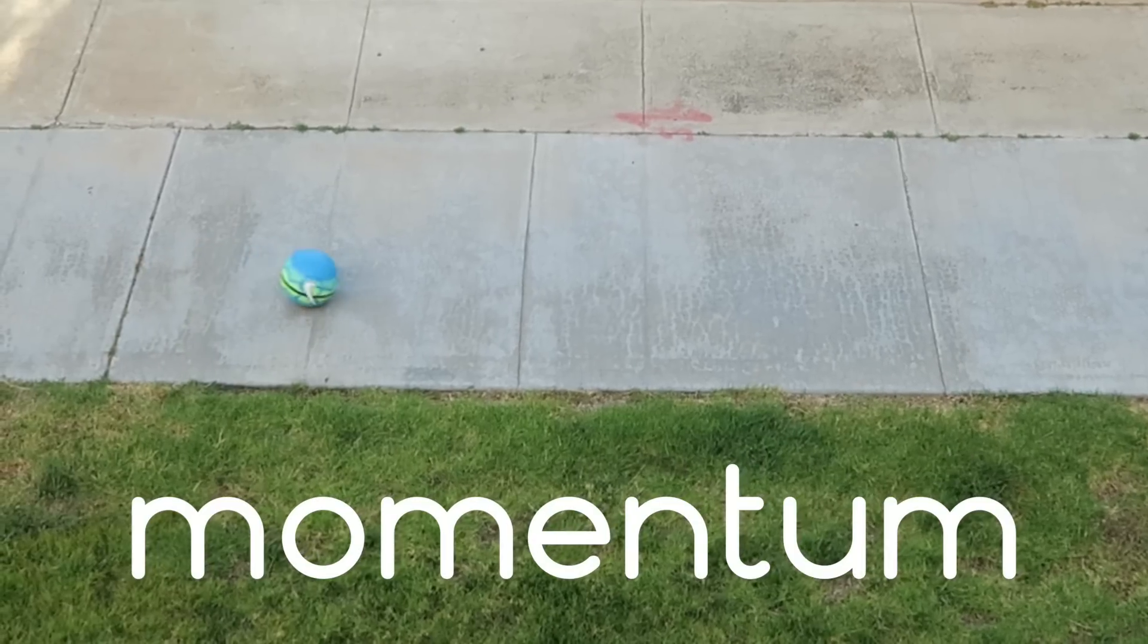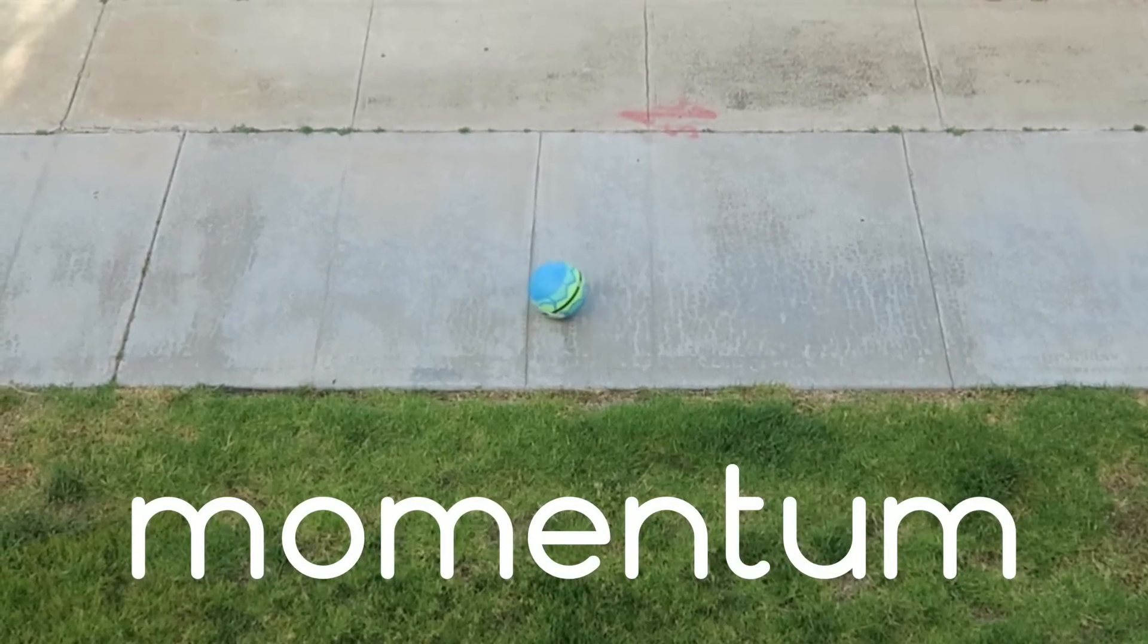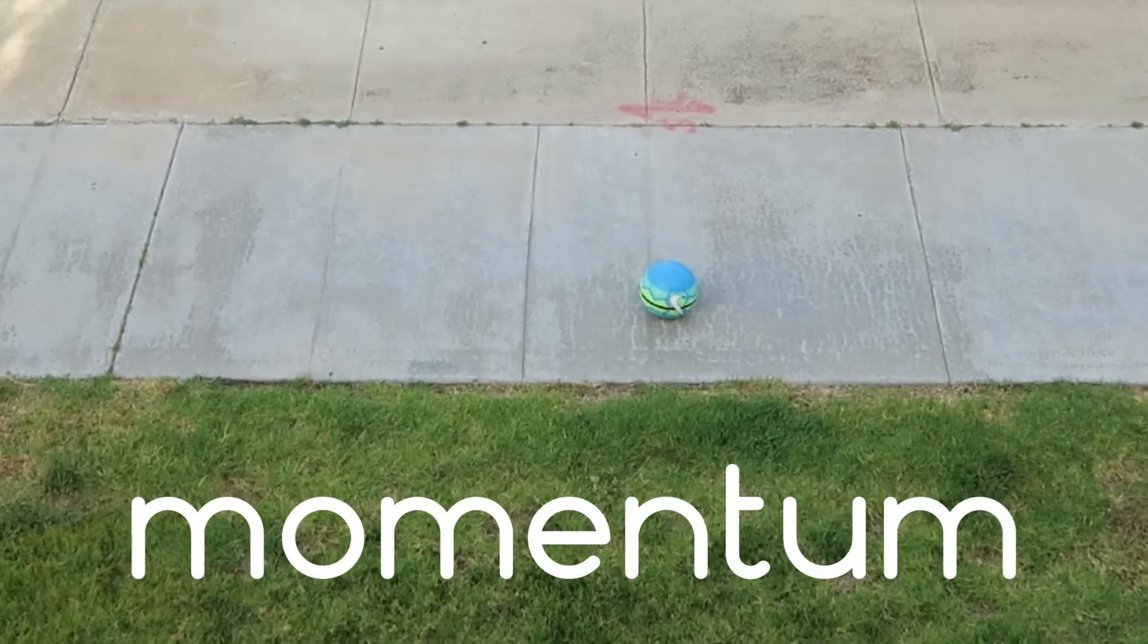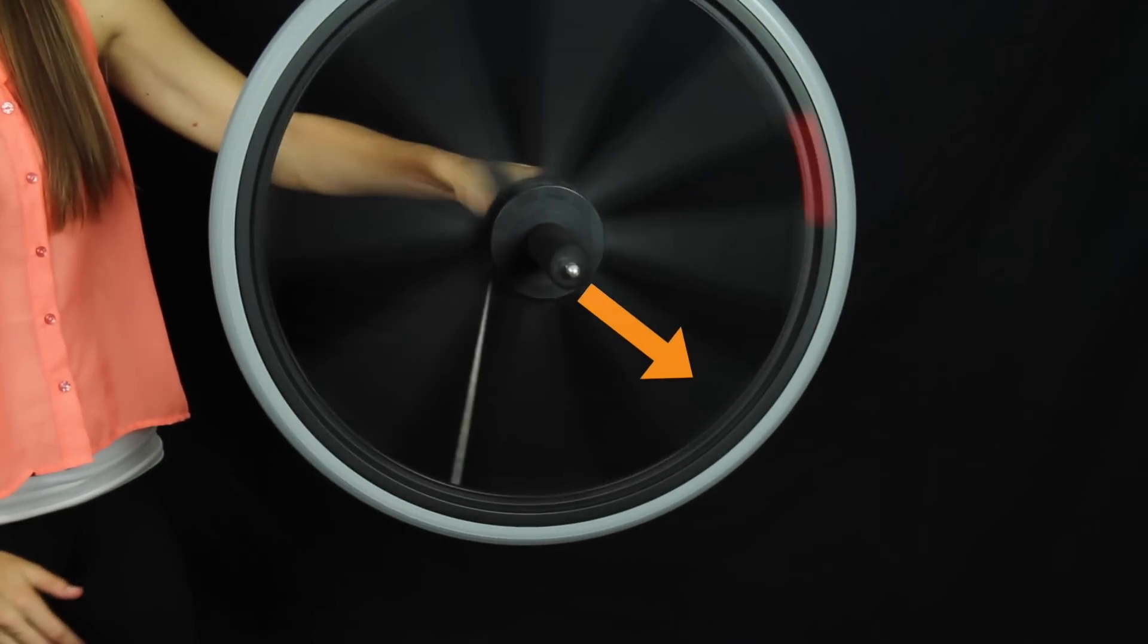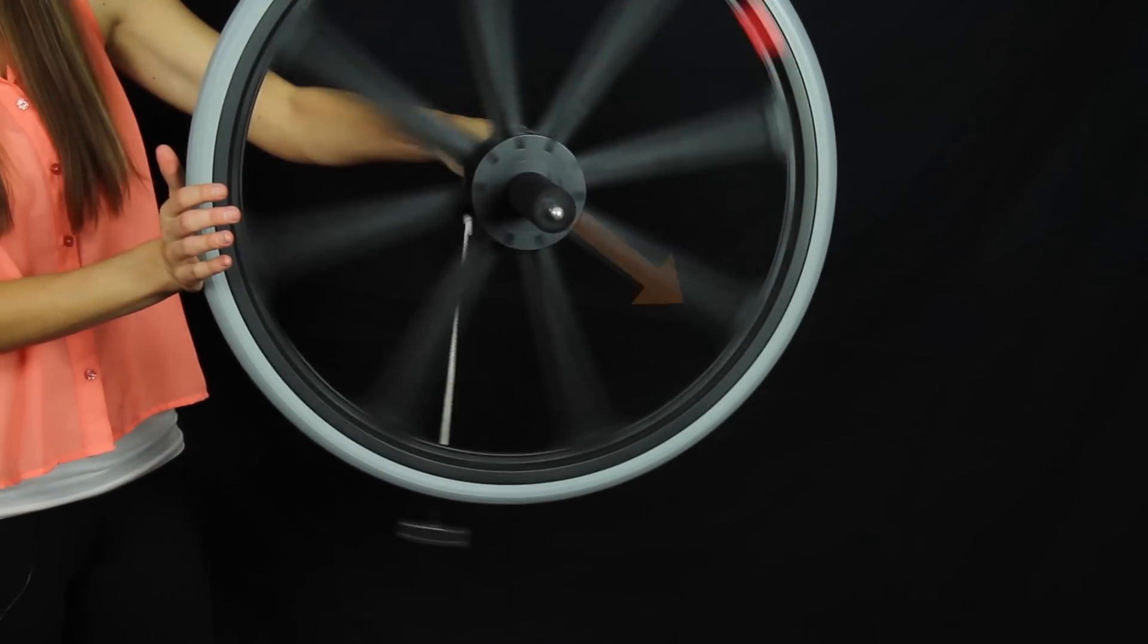Angular momentum is just like regular linear momentum. Something that's moving wants to keep moving, unless there's a force stopping it like friction. In the same way, this wheel wants to keep spinning with its angular momentum vector pointing in the same direction, unless there's a torque stopping it like my hand.